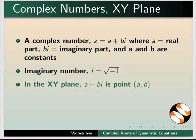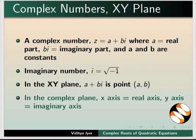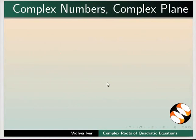In the xy-plane, a plus bi corresponds to the point a, b. In the complex plane, x-axis is called real axis, y-axis is called imaginary axis.